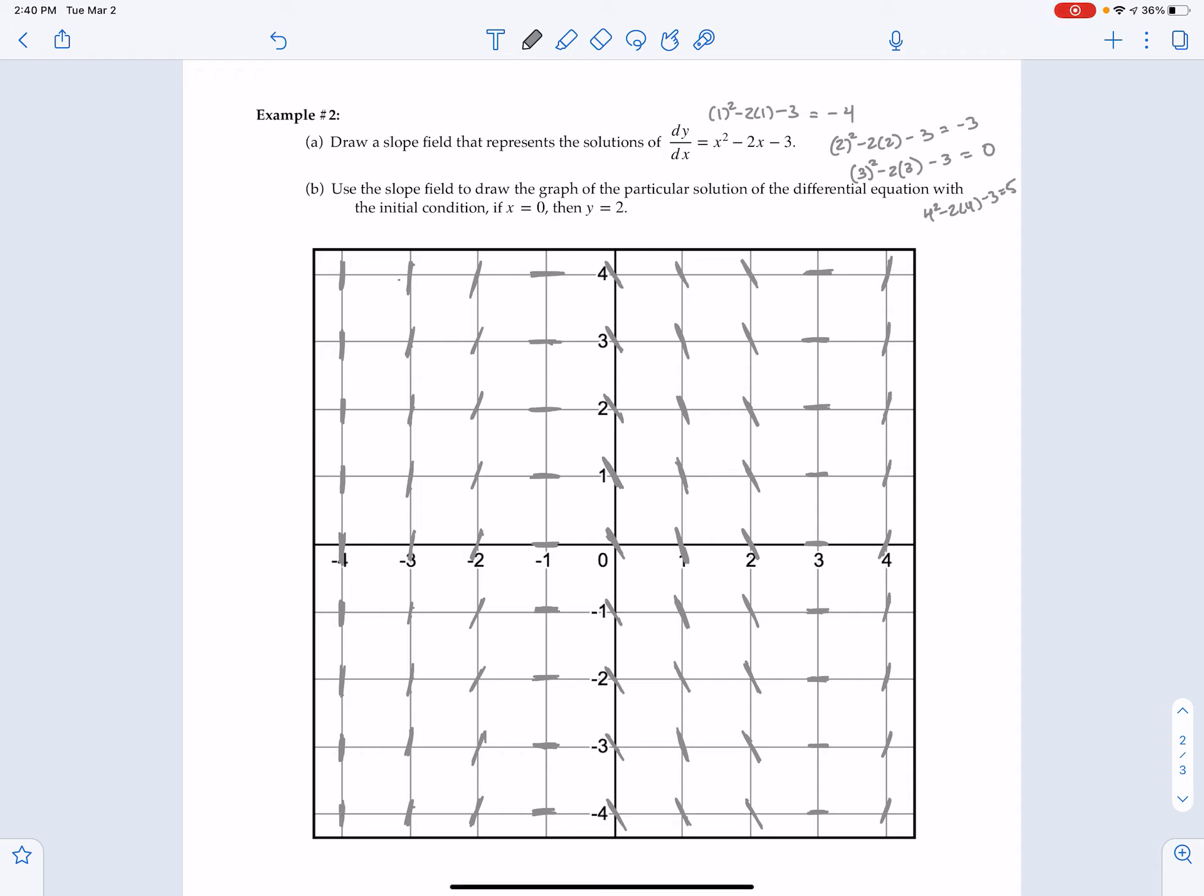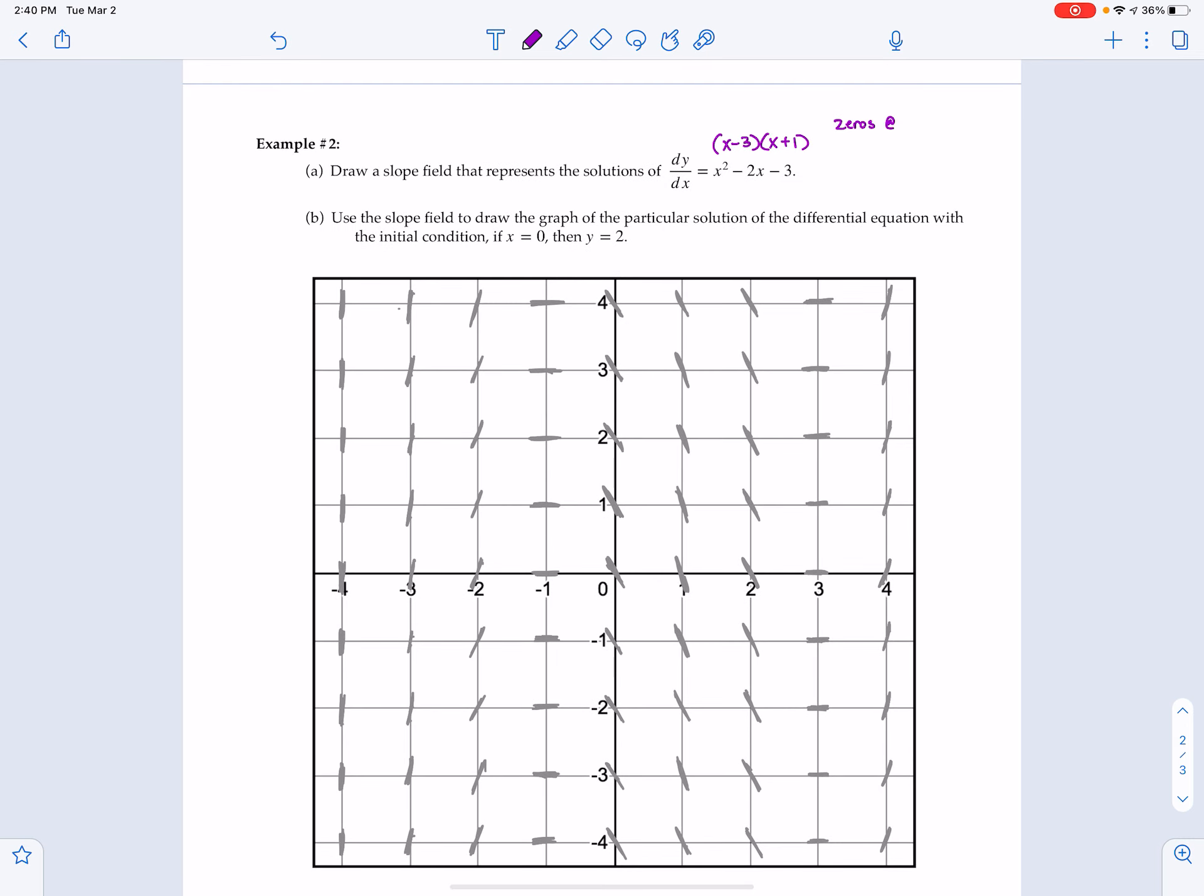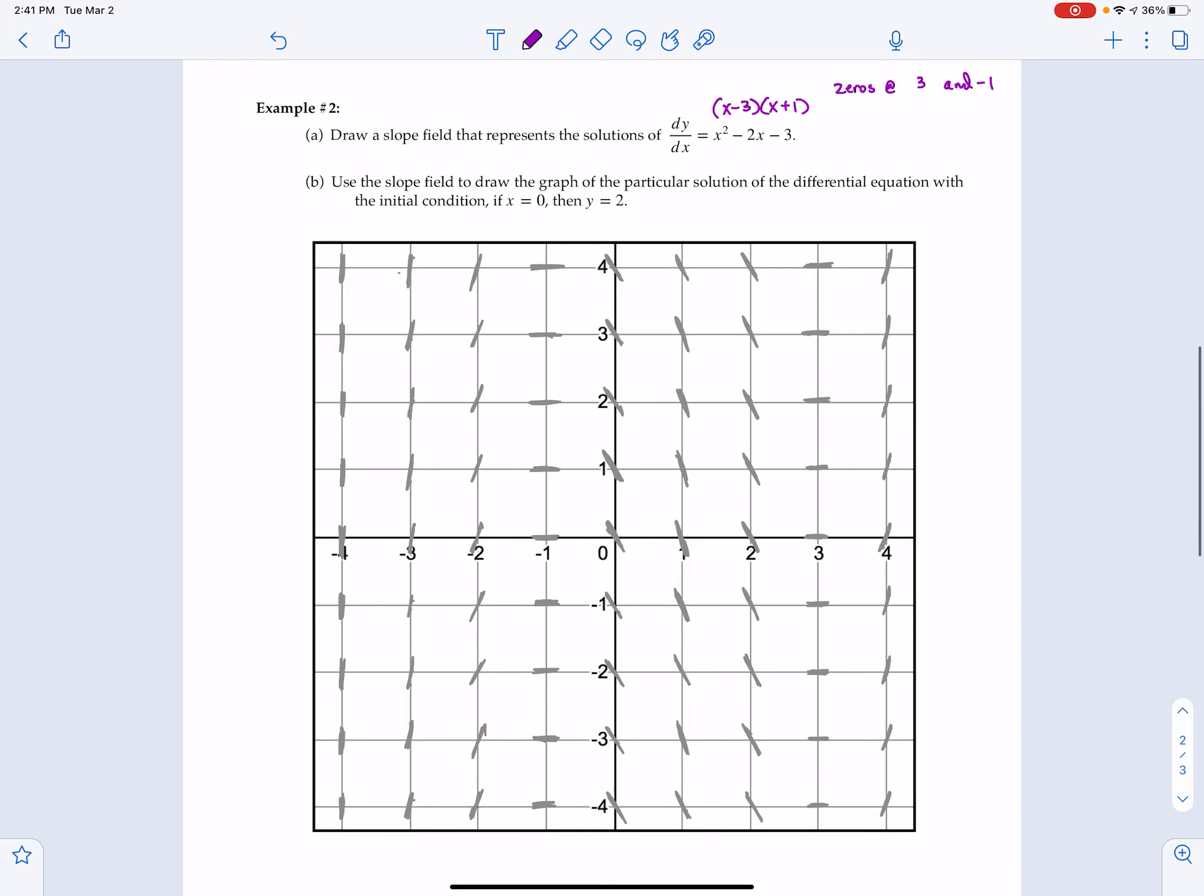Now, there's a few things that happen here when we're doing a problem like this. You may have noticed that this differential equation is a quadratic. And you can factor this just like you would factor a quadratic in your early algebra courses. And sure enough, we have zeros at 3 and negative 1. And that is exactly where we see those horizontal slopes. So there's a ton of different ways to do these. But you do need to have a small line segment at every grid point. And then we're going to head to part B.